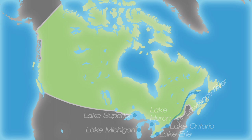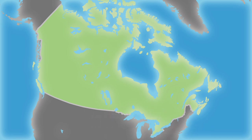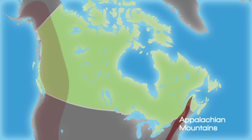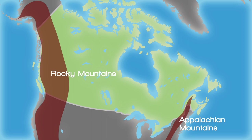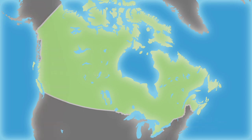In the east, the Appalachian Mountains reach into Canada. In the west, the Rocky Mountains stretch from north to south. They are part of a large mountain range that stretches from Alaska to Tierra del Fuego in South America.